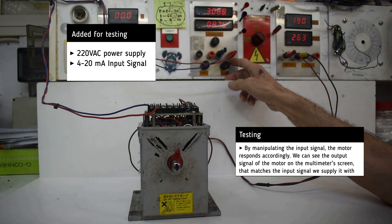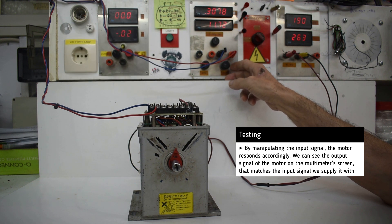As we manipulate the input signal, the motor rotates to the desired position. The motor stops in both occasions as we supply the minimum and maximum input signal.